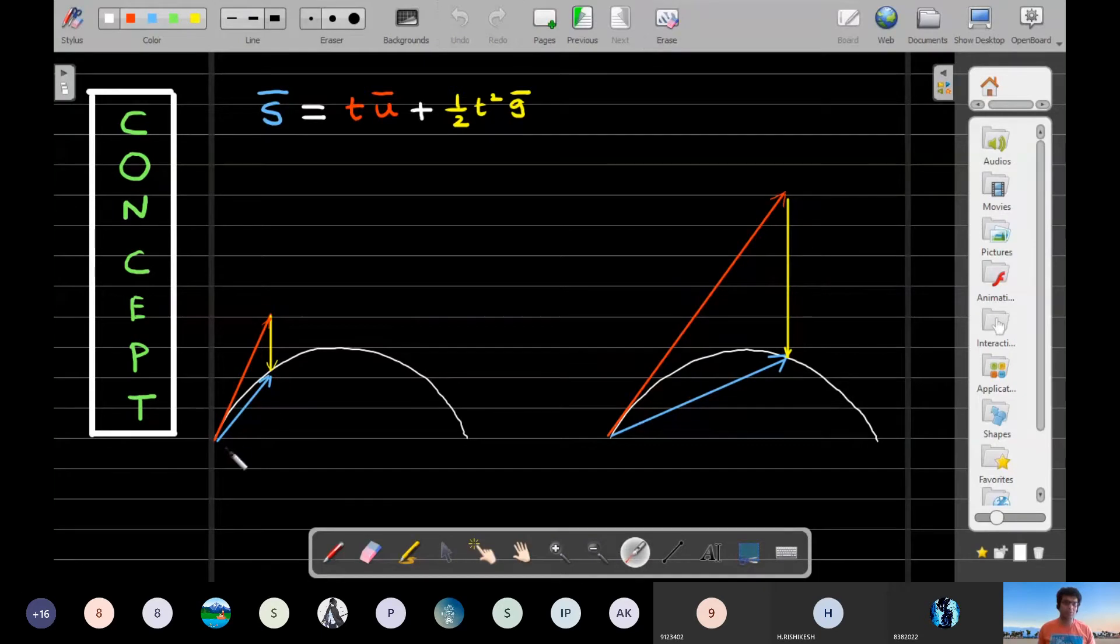The blue vector, s bar, can be represented as t into u bar. What is the physical significance? Imagine g was zero in one particular hypothetical situation - then displacement would have been just t into u bar. So t into u bar suggests the path that the particle would have taken in the absence of gravity. Then you can think that half g t squared into g bar represents a falling vector under gravity if particle was released from rest at this particular position.